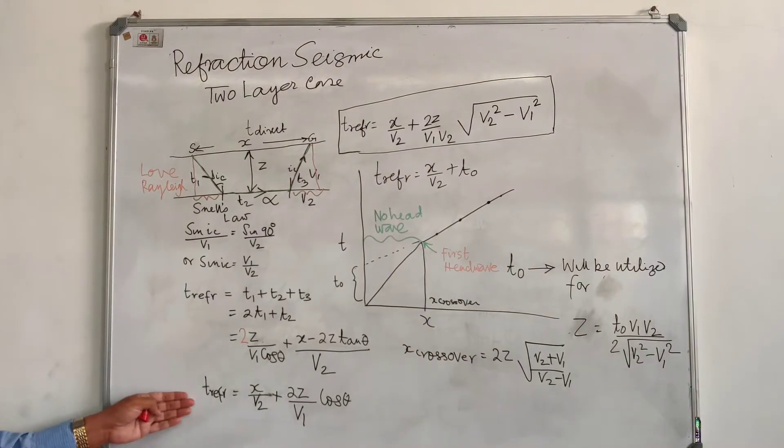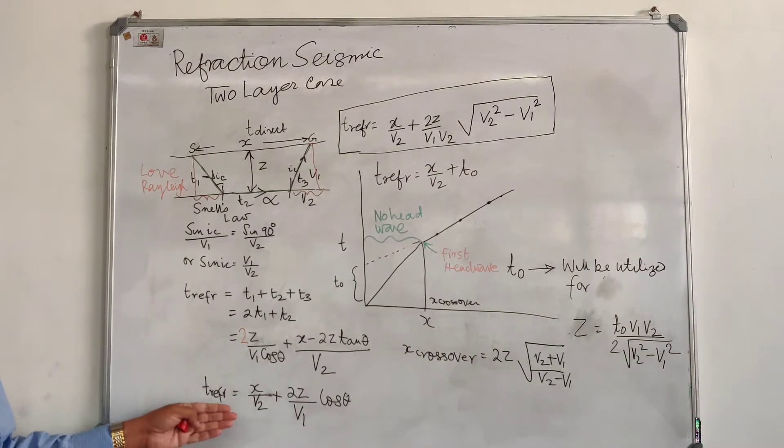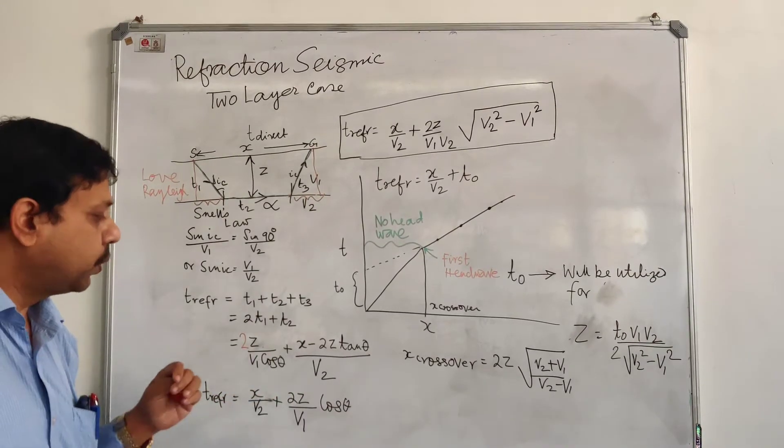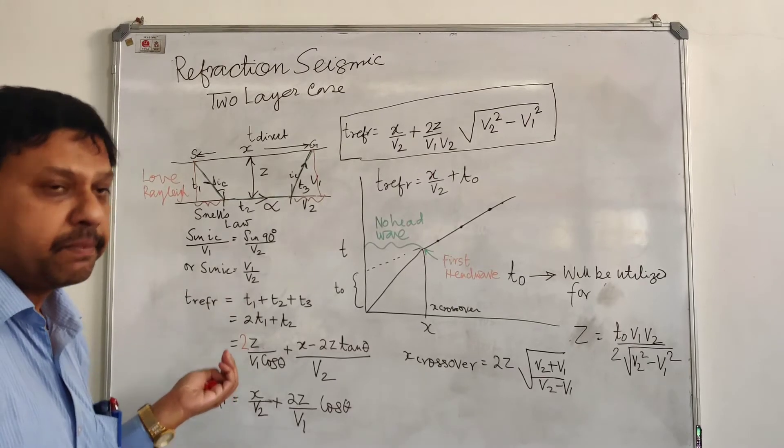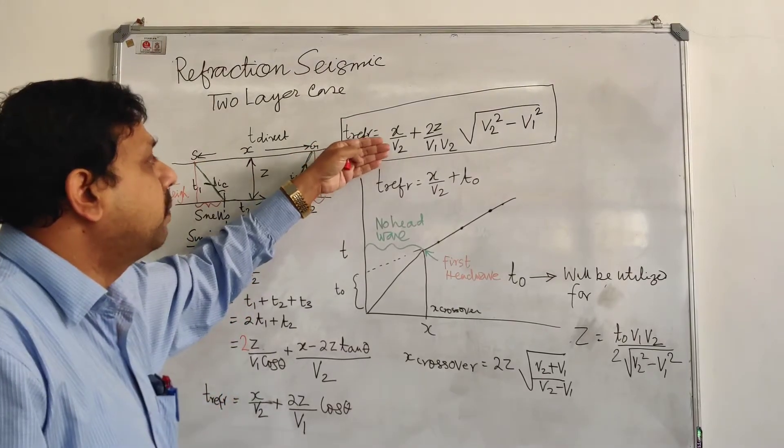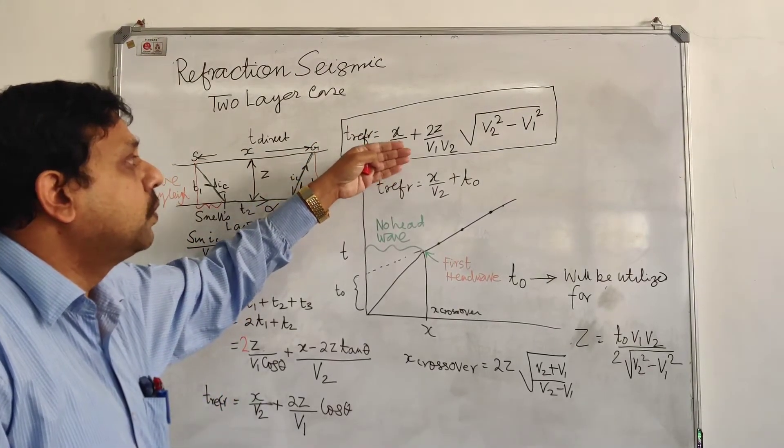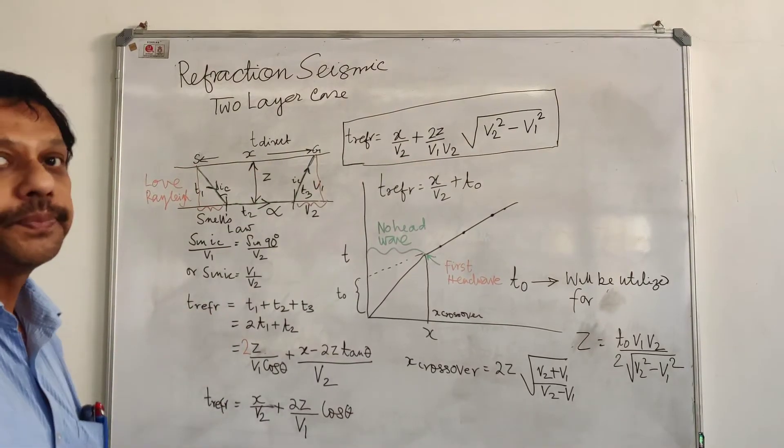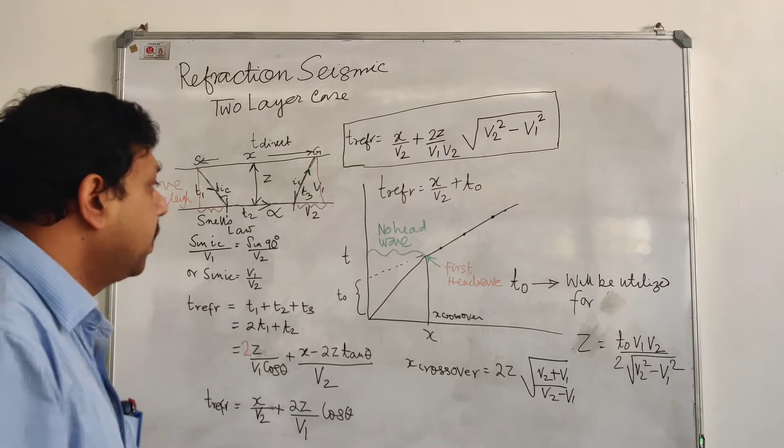If you arrange it, it will be X by V2 plus 2Z by V1 cos theta. And if I put the value of cos theta, then it will be X by V2 plus 2Z by V1 times V2 square root of V2 square minus V1 square.